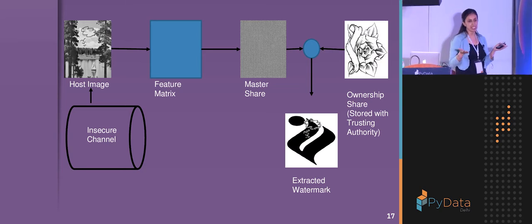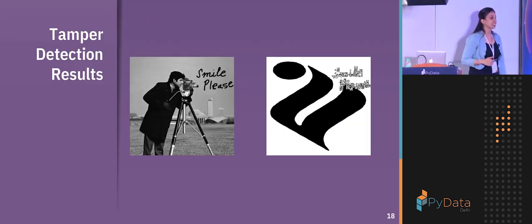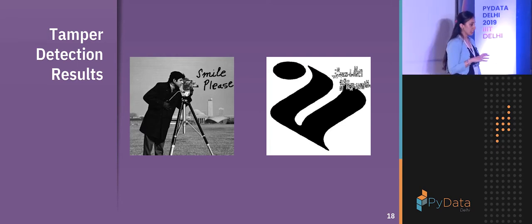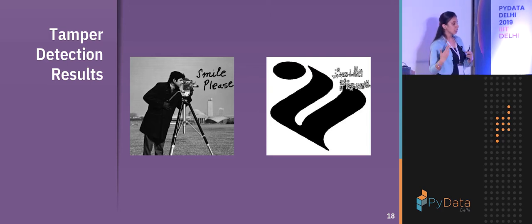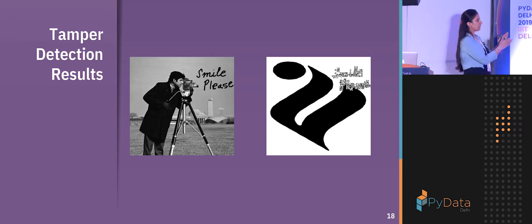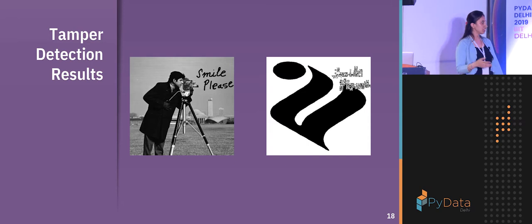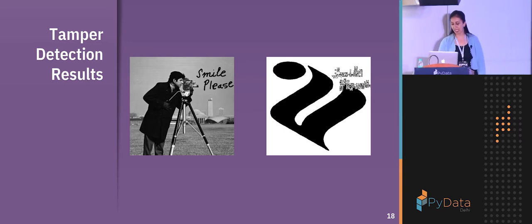This can work with printed images by printing shares on transparent sheets and overlapping them, or by scanning with phones. In crucial applications like medical imaging, even embedding a watermark that is invisible to human eyes modifies actual pixels, and even a one-pixel change can lead to wrong assumptions. So we need the image to remain unmodified. In my visual cryptography algorithm, I took a cameraman image, added the text 'smile please,' and when I retrieved the watermark, a distorted area was displayed showing the tampered block.